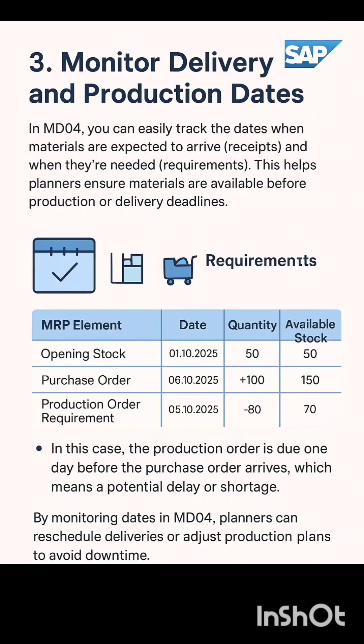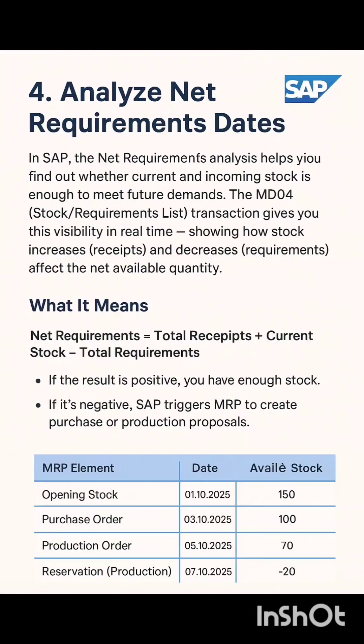MD04 also helps you monitor delivery and production dates in SAP. In MD04 you can easily see when materials are expected to arrive and when they are needed for production or delivery. For example, if your production order is due on October 5th but your purchase order arrives on October 6th, MD04 highlights this mismatch, helping you spot potential delays or shortages early. Planners can then reschedule deliveries or adjust production plans to ensure smooth operations.